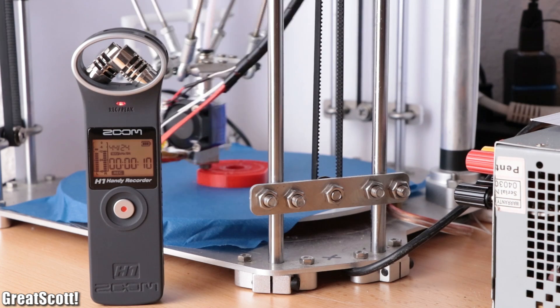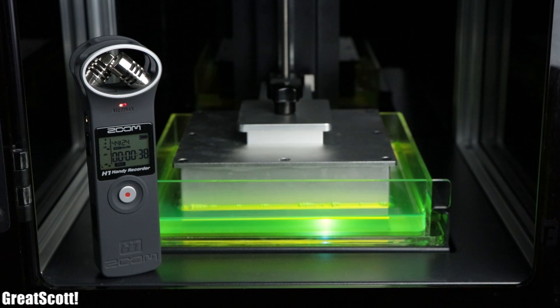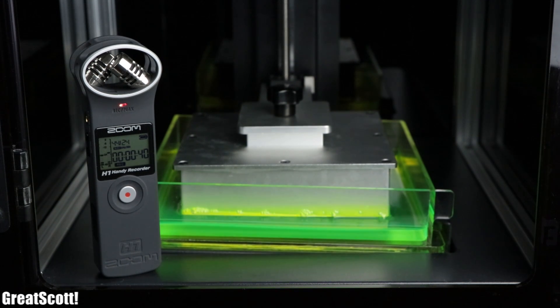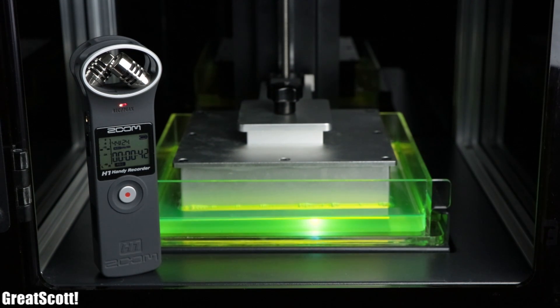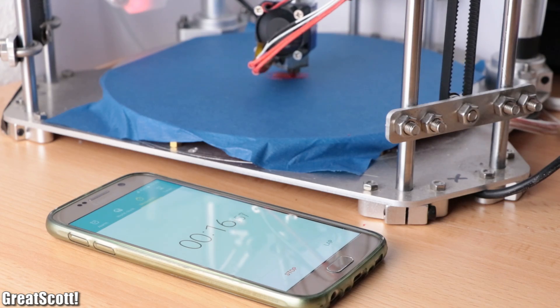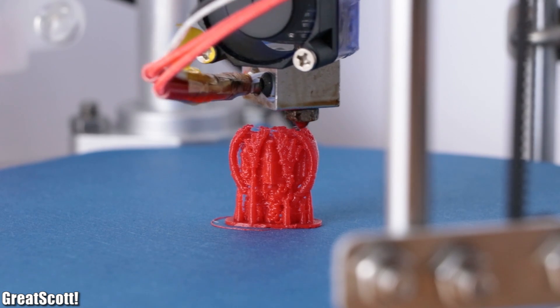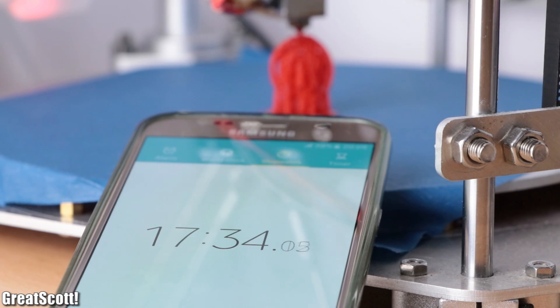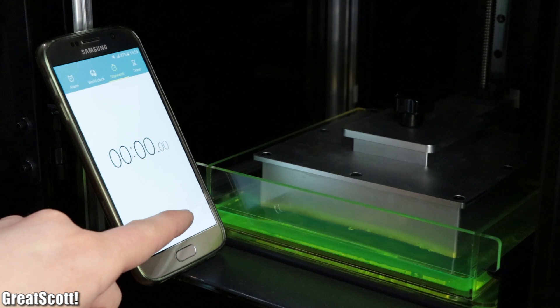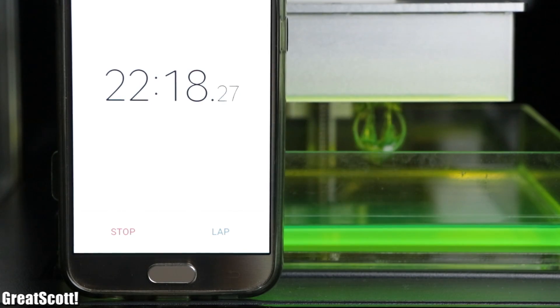But not only that, if we compare the noise level of my Delta printer to the noise level of the SLA printer, then it is clear which one can be used in a quiet work environment. And while I printed the ring model on the Delta printer, which was not a good idea to begin with, it took around 17.5 minutes, while the SLA printer required around 22.5 minutes for the same task.